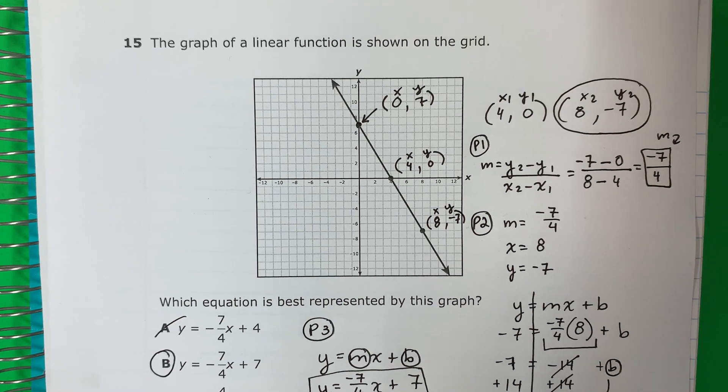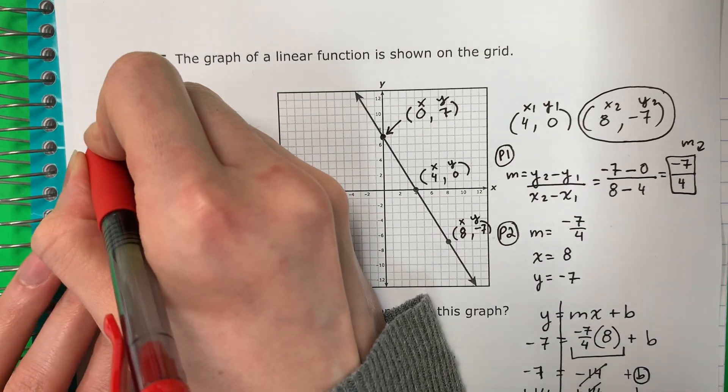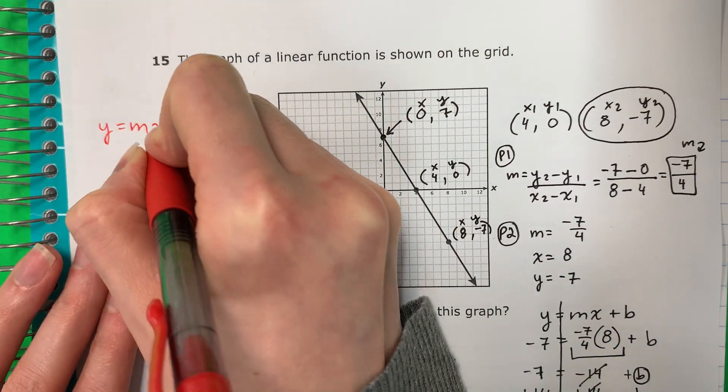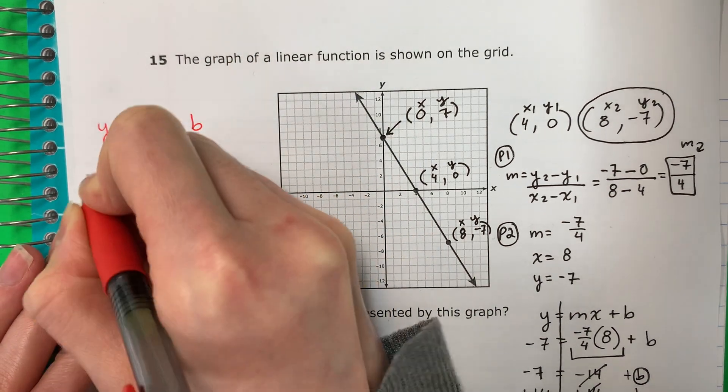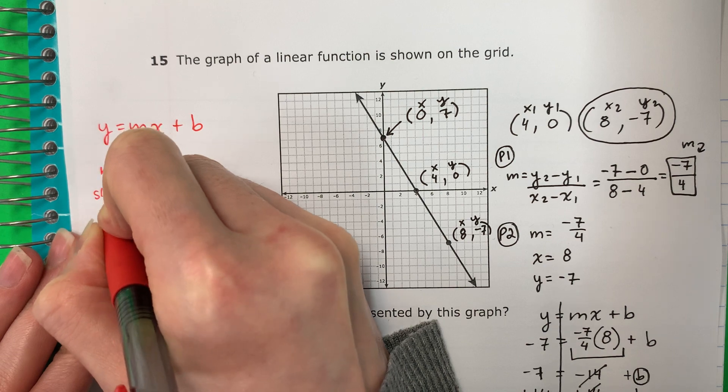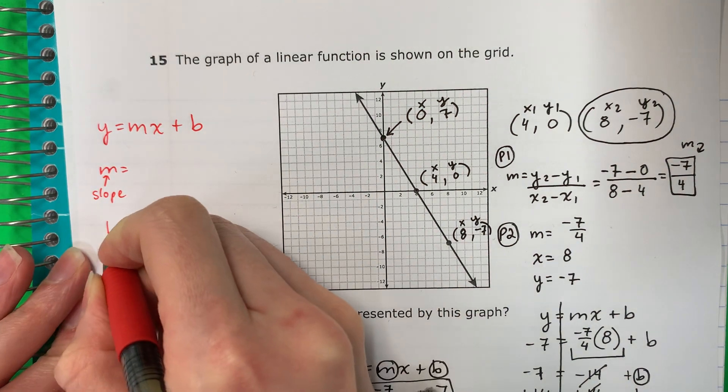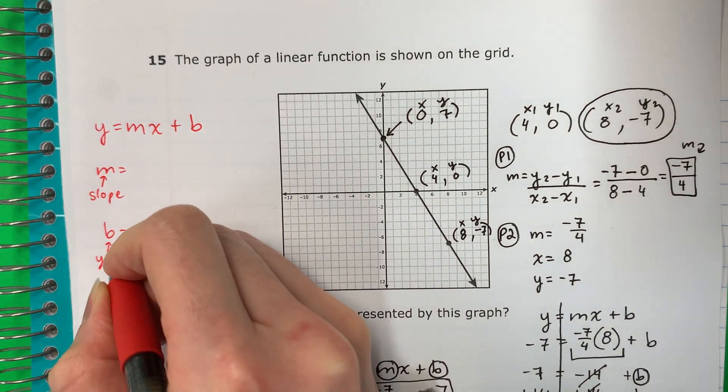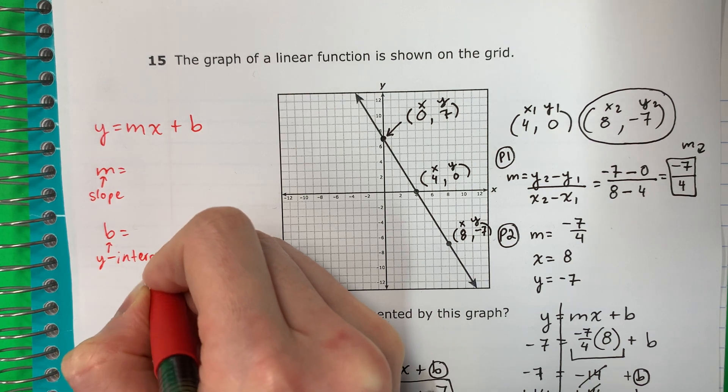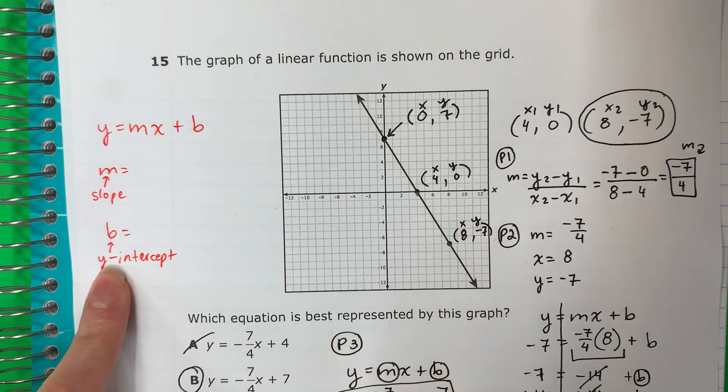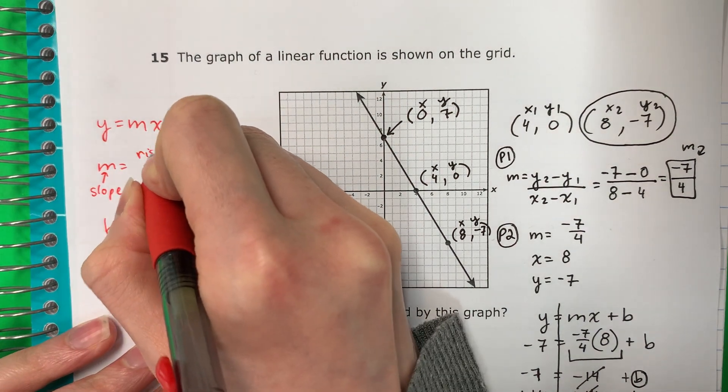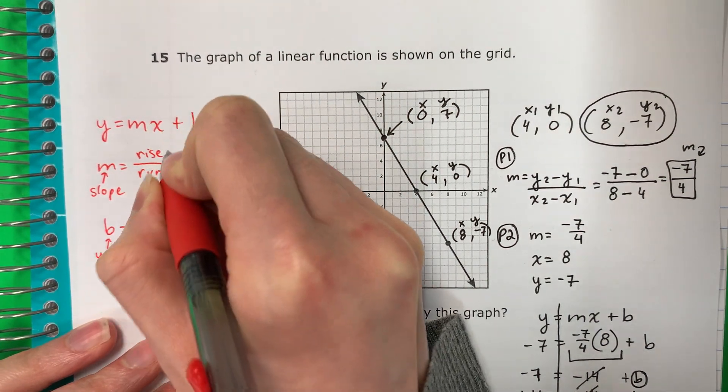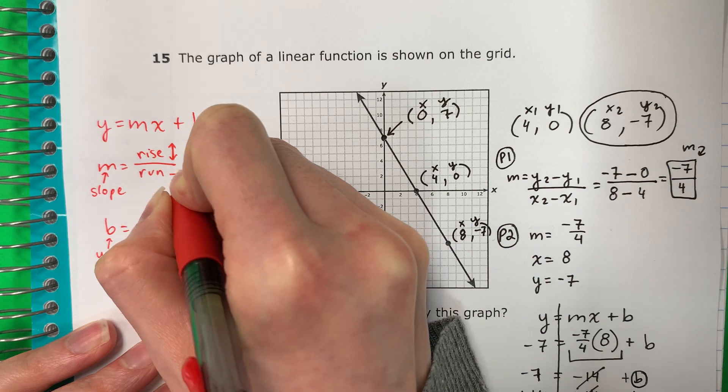The second way to do it. I'm going to do it right over here. Y equals MX plus B. M. B. Remember M is slope. And B is y-intercept. So M slope, B, y-intercept. M. Remember that is rise and run. Rise is up, down. Run is right.